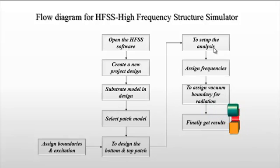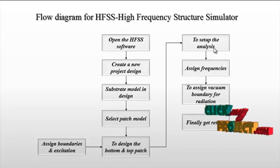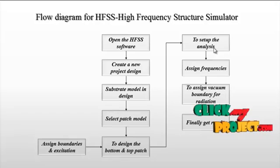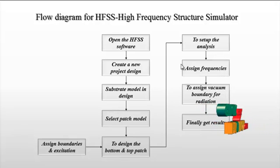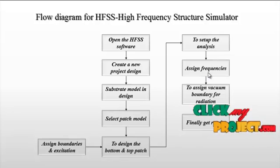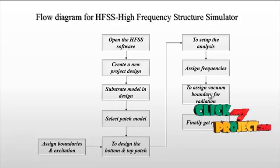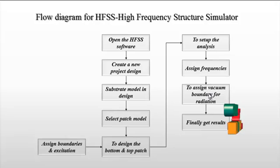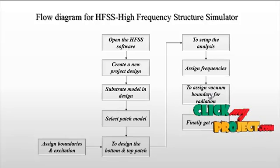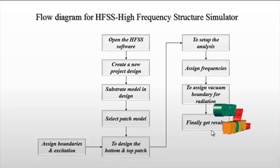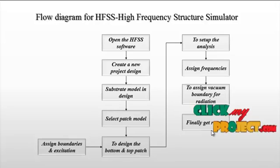Set up the analysis with start and stop frequencies and the center frequency. For example, 3 to 12 GHz is the range, with a center frequency of around 6 GHz. Assign the vacuum boundary for radiation — in this radiation box we assign the radiation of the patch antenna to prevent interference. Finally, get results like return loss, radiation pattern, VSWR, and bandwidth in both 2D and 3D dimensions.